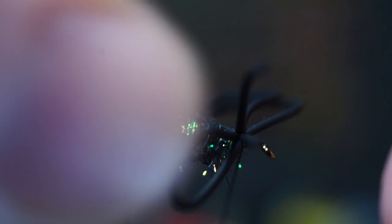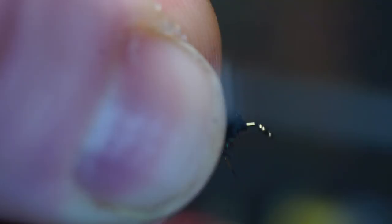Sorry my fat fingers are in the way, but after you make your X-Wraps, then pull the legs rearward and make a few tight wraps in front of them to keep them locked into place.